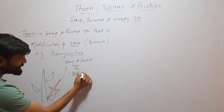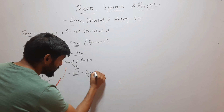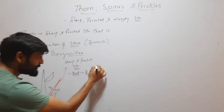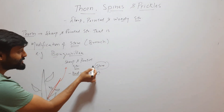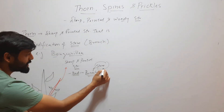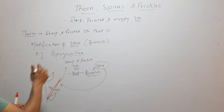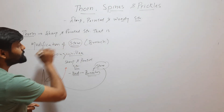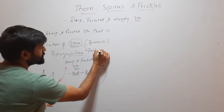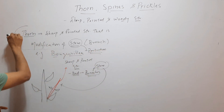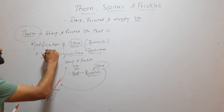Normally these buds will form branches, that is, you can also say stem. But in Bougainvillea, for protection, these branches are modified into sharp and pointed structures. So here, stem is modified into a sharp and pointed structure for protection. This structure is called thorn, and this type of structure is found in Bougainvillea.